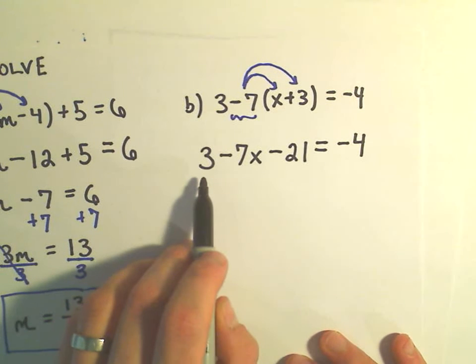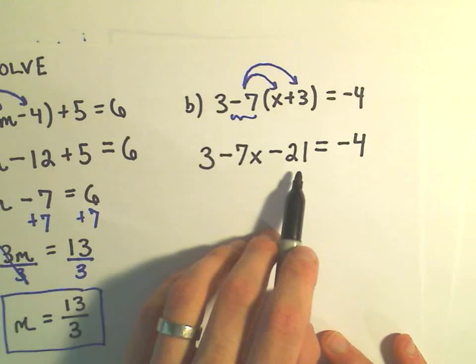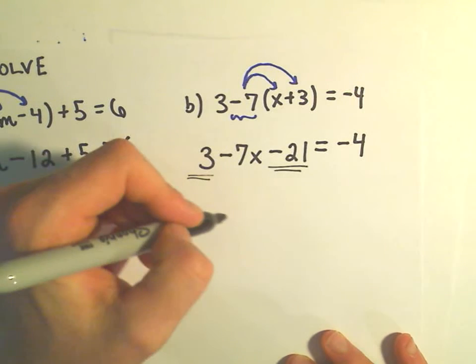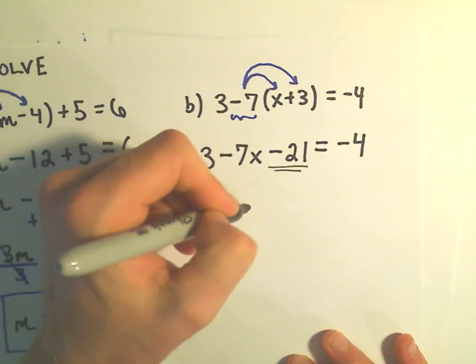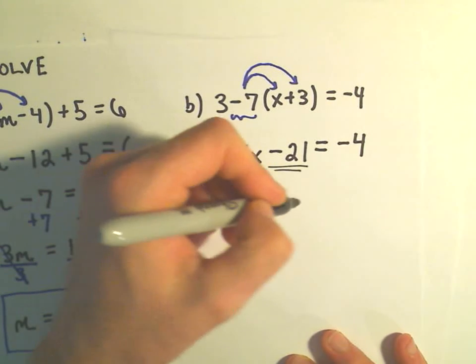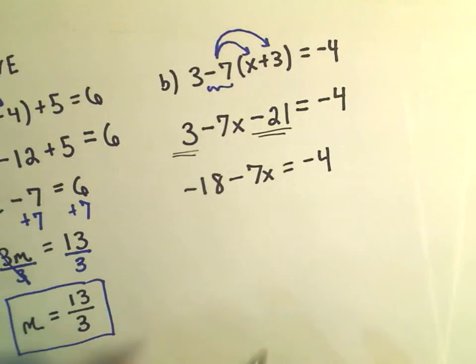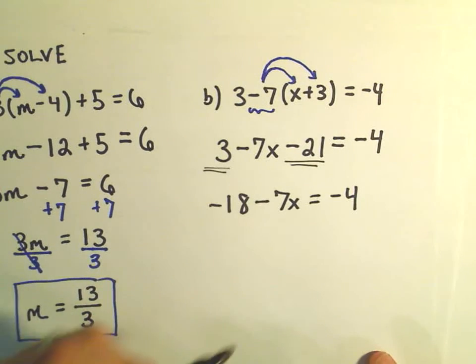It looks like to me we have a positive 3 minus 21, so positive 3 minus 21, that would leave us with negative 18 minus 7x equals negative 4. And again, I'm trying to get down to where eventually I just have x all by itself.